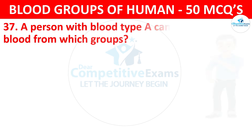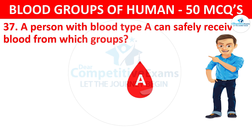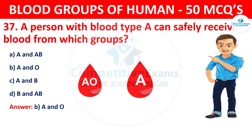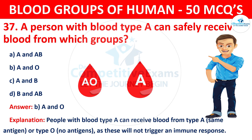Question 37: A person with blood type A can safely receive blood from which groups? The correct answer is B, A and O blood groups. People with blood type A can receive blood from type A (same antigen) or type O (no antigens), as these will not trigger an immune response.